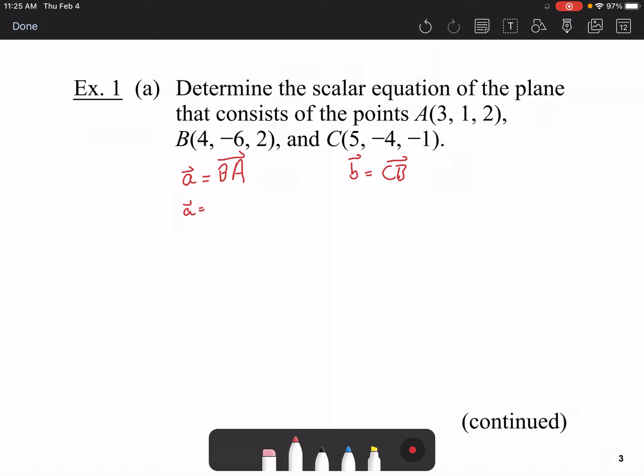Okay, so now that means you've got to take the points, the vector 3, 1, 2, and subtract the vector 4, negative 6, 2 from it. And that gives us negative 1, negative 5, oops sorry, my apologies. That should be 7, and 0. And vector B should be the values of 4, negative 6, and 2, subtract 5, negative 4, and negative 1.